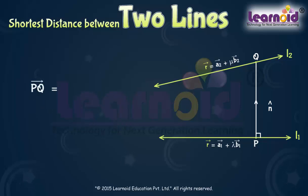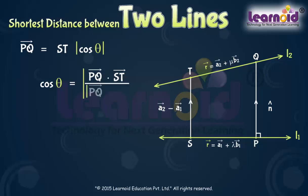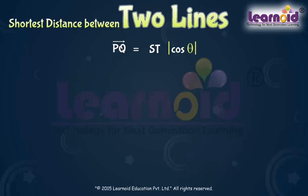Then PQ vector equals T dot n-cap. Let ST be a line joining two points on lines L1 and L2, and let theta be the angle between ST and PQ. Then PQ equals ST times the modulus of cos theta, where cos theta equals the modulus of PQ dot ST divided by the modulus of PQ times the modulus of ST. The vector ST equals A2 vector minus A1 vector. Substituting PQ dot ST into the cos theta formula, we get cos theta equals the modulus of D times n-cap dot (A2 minus A1), divided by D times ST.